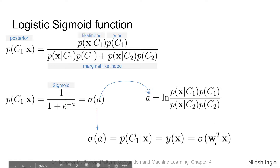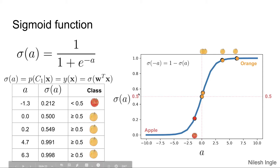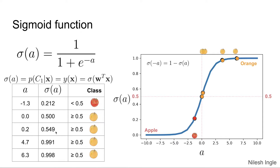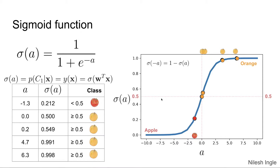If we have a dataset of scores or activations and pass them through the sigmoid function, we get probability values. We then compare each value against the threshold of 0.5. For example, a sigmoid output of 0.212 is less than 0.5, so that sample is classified as an apple, whereas outputs of 0.5 or 0.549 are above the threshold and are classified as oranges.